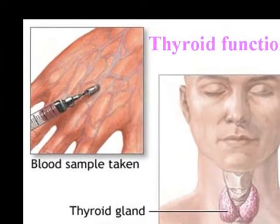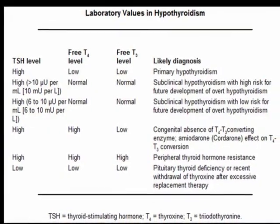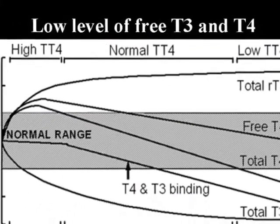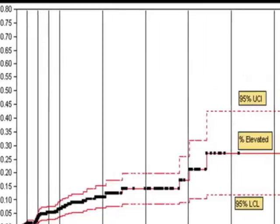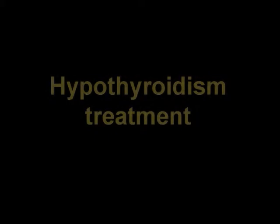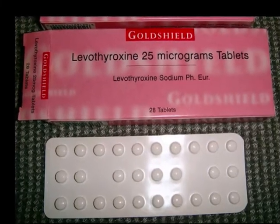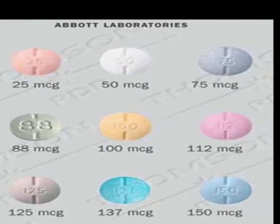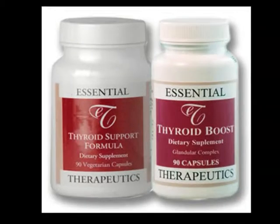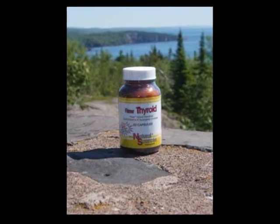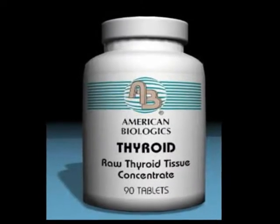The laboratory investigation of hypothyroidism is extremely simple. Usually, clinical assessment combined with a single estimation of thyroid hormones and TSH is sufficient to make the diagnosis. The aims of treatment with thyroxine are to ensure that patients receive a dose that will restore well-being, which usually retains the TSH level to the lower end of the normal range. It is important to avoid both under- and overtreatment.